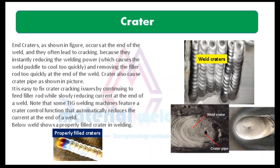Number 3 is weld craters, also called end craters. End craters, as shown in the figure, occur at the end of the weld and they often lead to cracking, because they instantly reduce welding, causing the weld puddle to cool too quickly, and removing the filler rod too quickly at the end of the weld. Craters also cause crater pipe as shown in the picture. It is easy to fix crater cracking issues by continuing to feed filler rod while slowly reducing current at the end of the weld. Note that some TIG welding machines feature a crater control function that automatically reduces the current at the end of the weld. The image below shows a properly filled crater in welding.